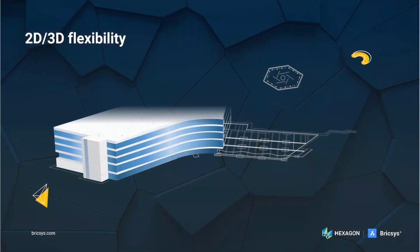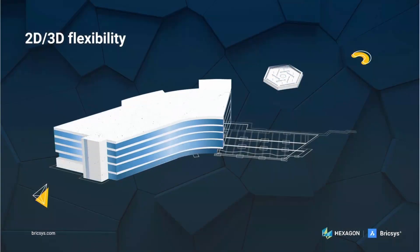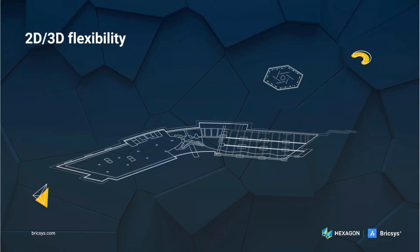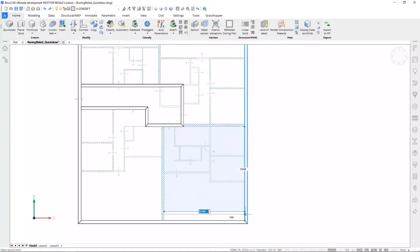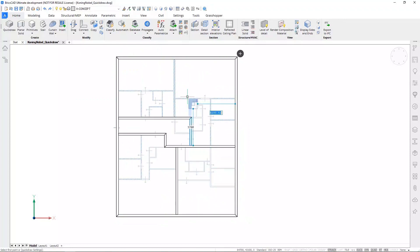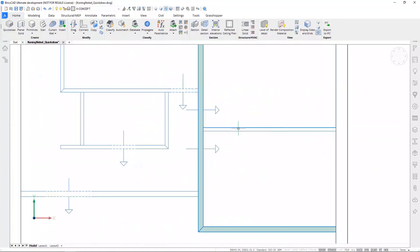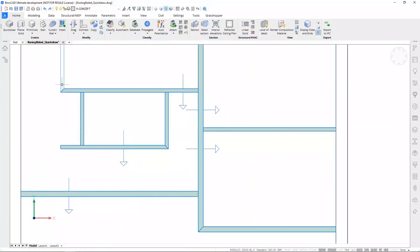BricsCAD offers 2D documentation, 3D modelling and open BIM workflows all in the same familiar DWG environment. Start with a conceptual mass and convert back to 2D, or create quick building models with the Quickdraw tools to go from 2D to 3D to BIM in a matter of clicks.